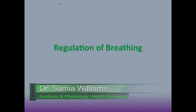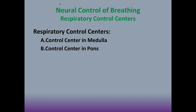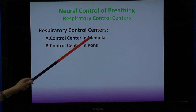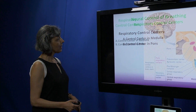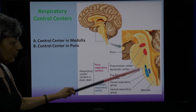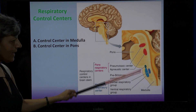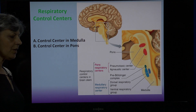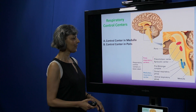Welcome back. The next topic we're going to discuss is the regulation of breathing — specifically the nervous control of breathing. In the brain, we have two respiratory control centers: one in the medulla and the other in the pons. We're going to look at where they are located.